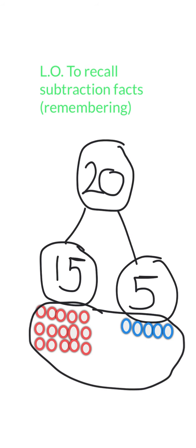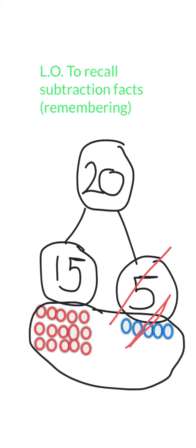Imagine these are skittles. We've got 15 skittles on this side and 5 skittles on this side — altogether we've got 20 skittles. Now if I've got 20 skittles and I'm going to take away 5 of those, then what happens is we're left with the other part of the number, 15. As you can see we've still got our 15 skittles.